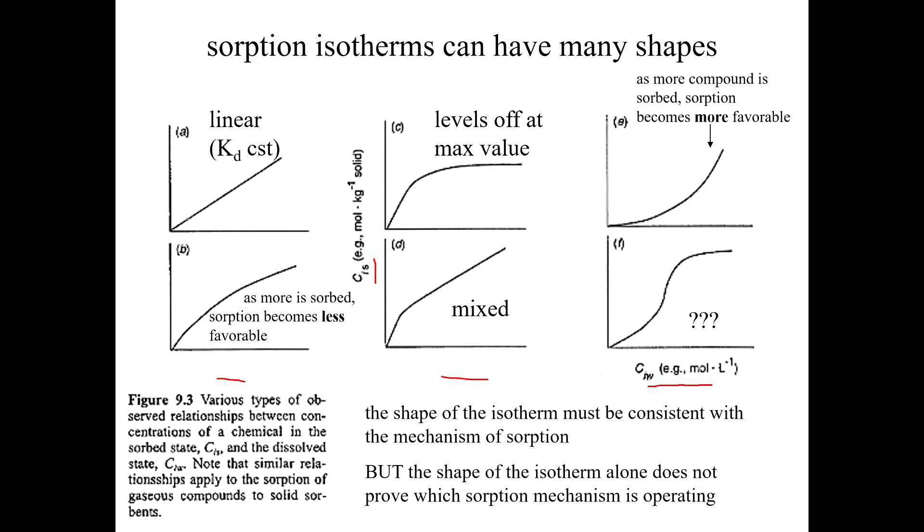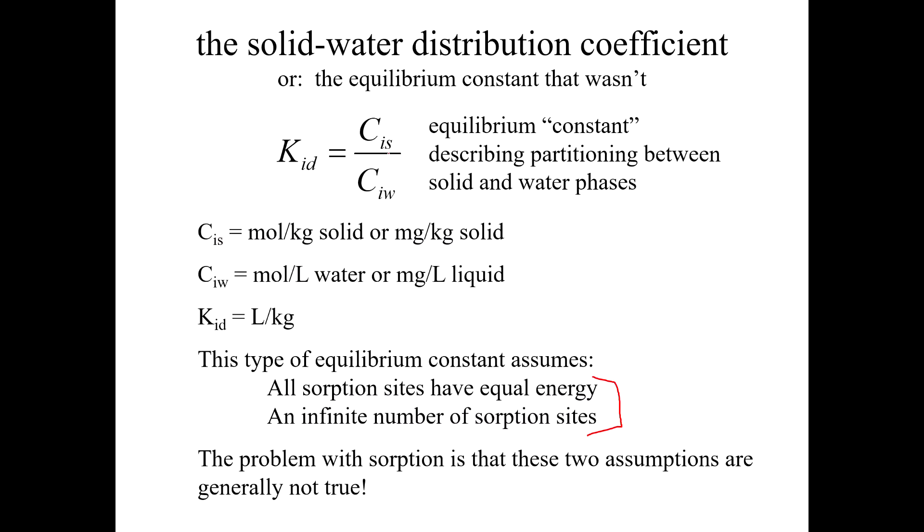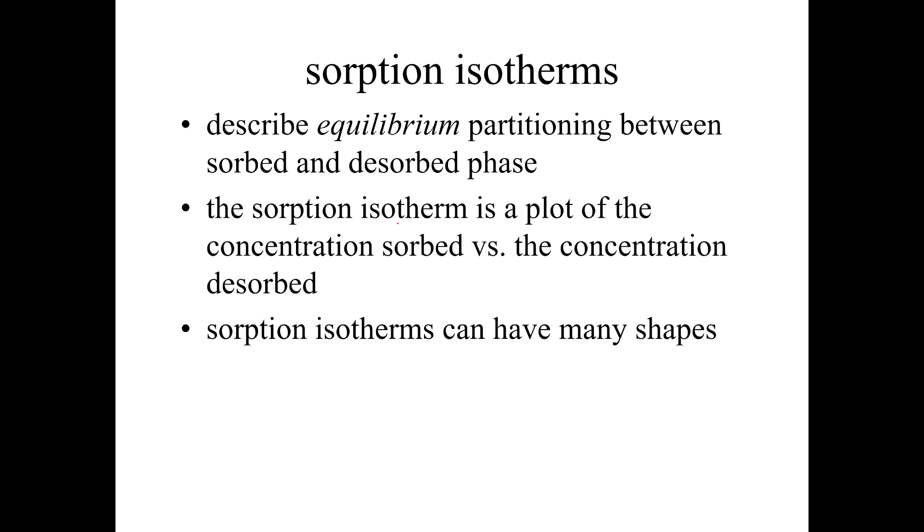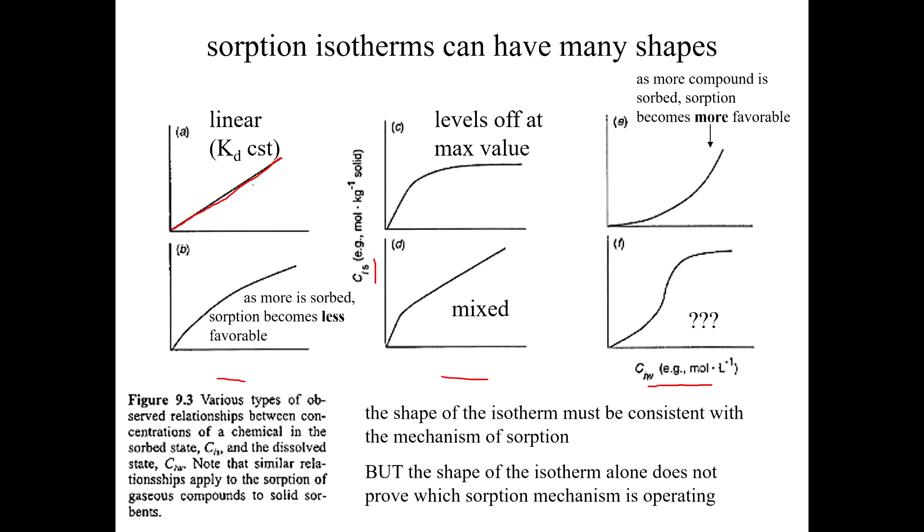So sometimes this sorption isotherm is linear. It's linear, life is easy. That means KD, which we have just defined as CS over CW, is then the slope of that line, and it's constant because the slope ain't changing. So KD is constant, and you can get away with using this very simple formulation. But in reality, that usually doesn't happen.